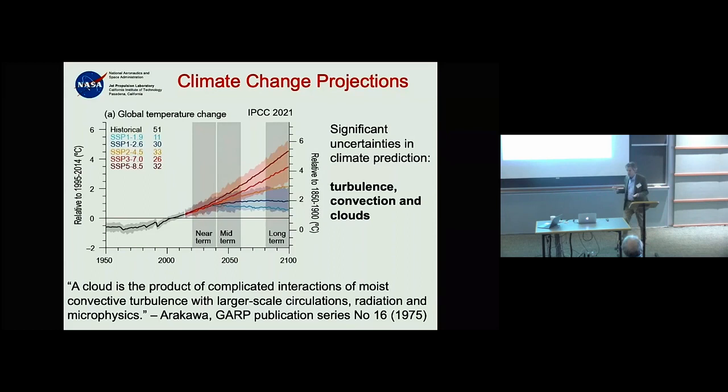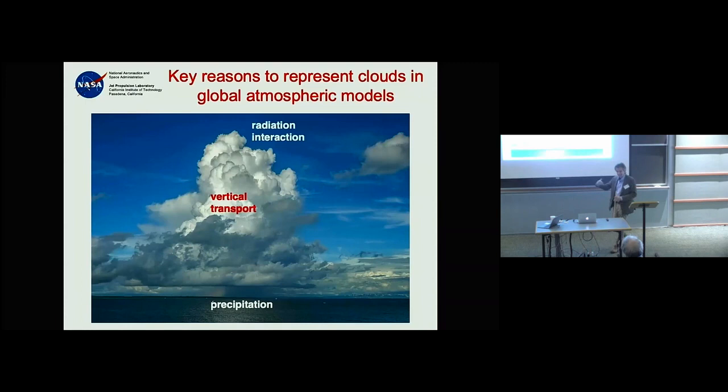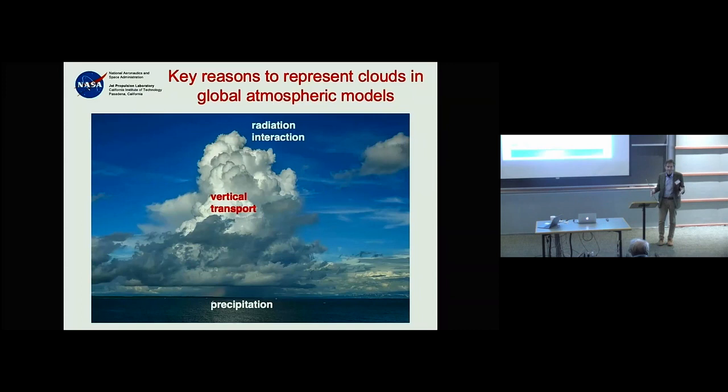From a pragmatic perspective, why do global atmospheric models — both weather and climate — need clouds? Most weather prediction models only started to have some sort of interactive clouds in the mid-1980s for global atmospheric models.